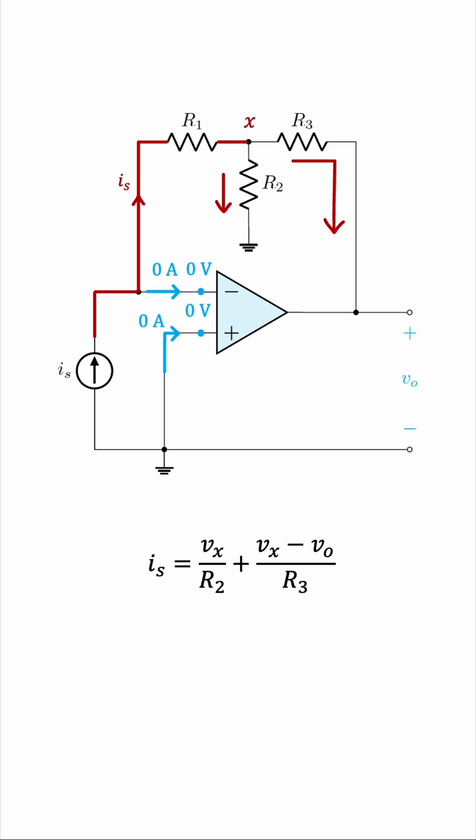We need to find the ratio of V0 to IS, so this Vx is causing us a problem because we only want resistors to appear in the equation so that the ratio can only be in terms of R1, R2, and R3, the circuit parameters.